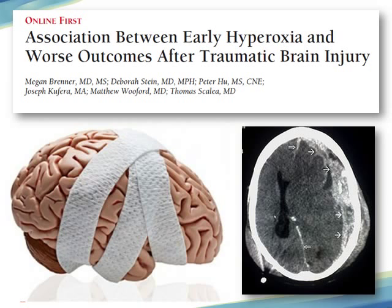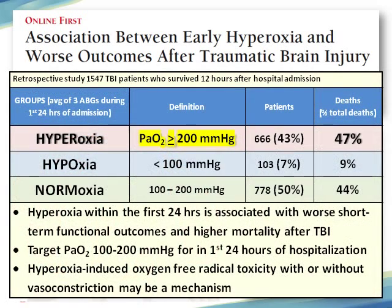Here's another study that looks at hyperoxia in the traumatic brain injured patient. Of the almost 1,500 patients who had survived at least 12 hours in the hospital, the hyperoxia group — defined as a PaO2 greater than 200 — had an almost 50% death rate. They concluded that hyperoxia was associated with higher mortality rates and also worse short-term functional outcomes, and suggested a target goal for PaO2 of anywhere from 100 to 200. They also suggested that a mechanism for this might be that too much O2 causes oxygen free radical toxicity, either with or without vasoconstriction.